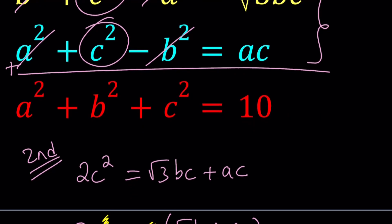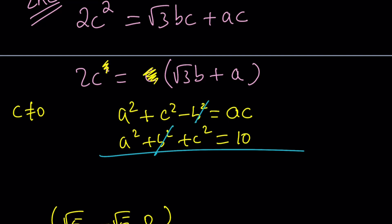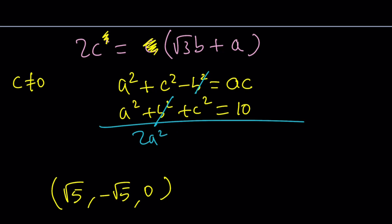How can we use it? I just noticed that I can go ahead and add the second and the third equation. a² + c² - b² = ac, and the third equation is a² + b² + c² = 10. If you go ahead and add these equations up, that should only cancel out the b. You're going to end up with 2a² + 2c² = ac + 10.